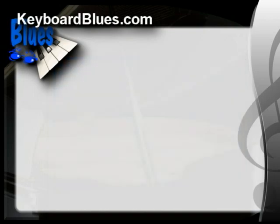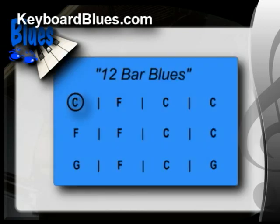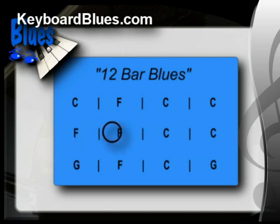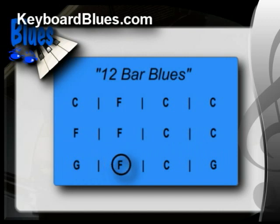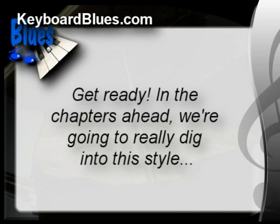One final thought before I play through the 12-bar blues: I want you not to be too concerned about what notes I'm playing. At this point, I just want you to get a sense for the overall form of the blues. Here we go — the progression moves through C, up to F, back to C; then the second line goes to F and back to C; and the last line goes G, F, C, G. Hang on, because in the chapters ahead we're going to really dig into this blues style and figure out how to bring it to life on the keyboard.